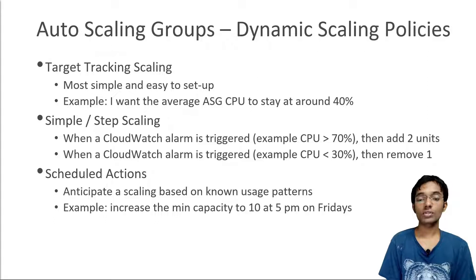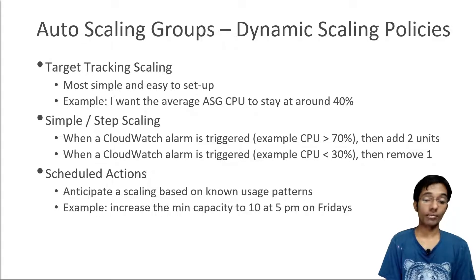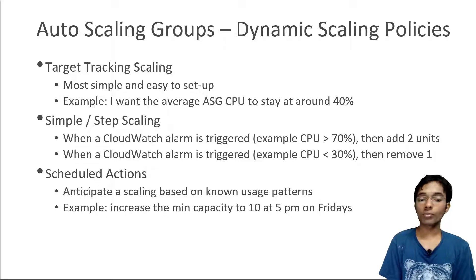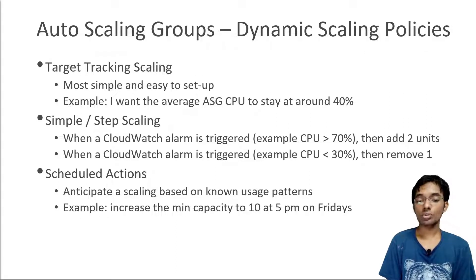If you want to add more complexity, you can set up a CloudWatch alarm. For example, that CloudWatch alarm could say: if the CPU is more than 70%, then add two units. This is called step scaling. And if your CloudWatch alarm is triggered because the CPU is less than 30%, then remove units. This is step scaling - it's a bit more involved because you need to set up these rules yourself, but it gives you more control over how the Auto Scaling Group scales.